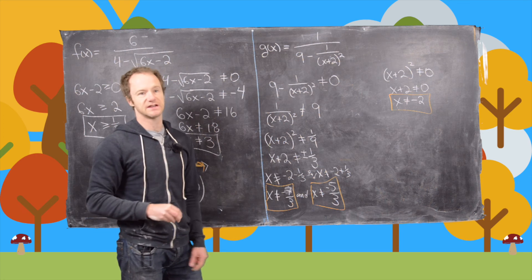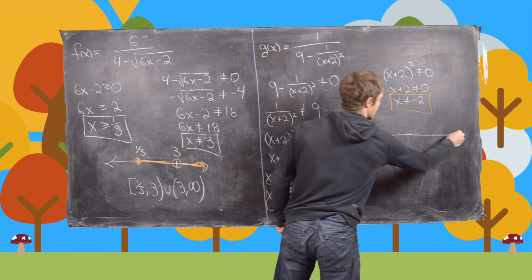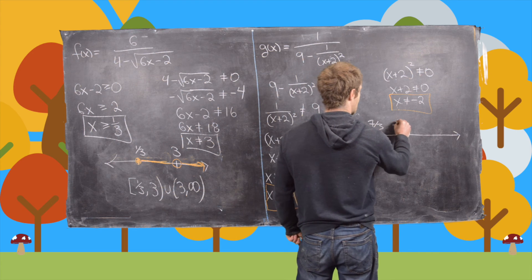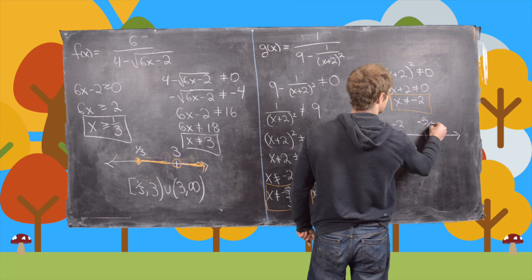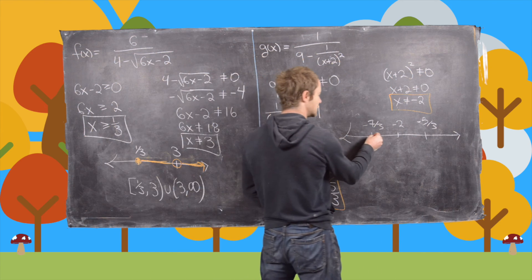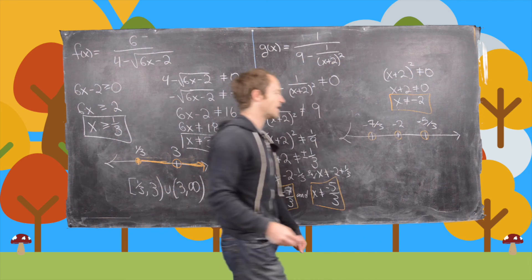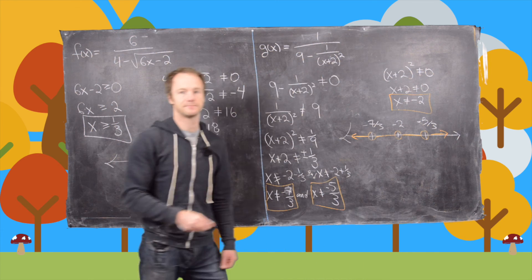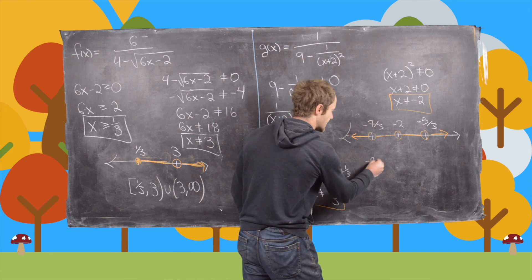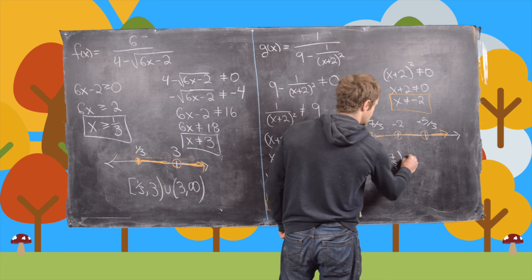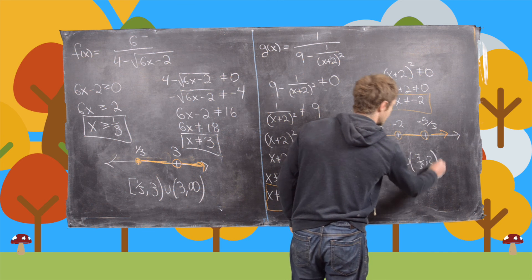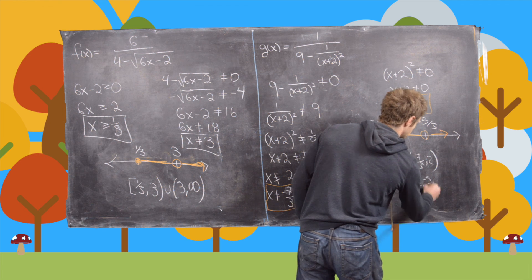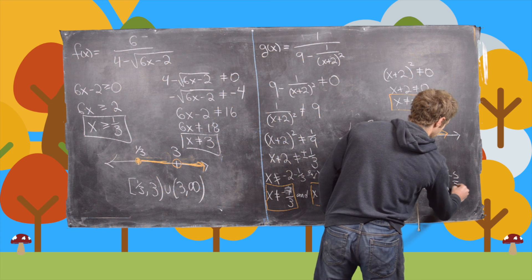Now let's graph these conditions on the number line. The important points are negative 7 over 3, negative 2, and negative 5 over 3, in that order. We're not allowed to include any of those, but we can include every other number. So putting that into interval notation, the domain is: negative infinity to negative 7 over 3, union negative 7 over 3 to negative 2, union negative 2 to negative 5 over 3, union negative 5 over 3 to infinity.